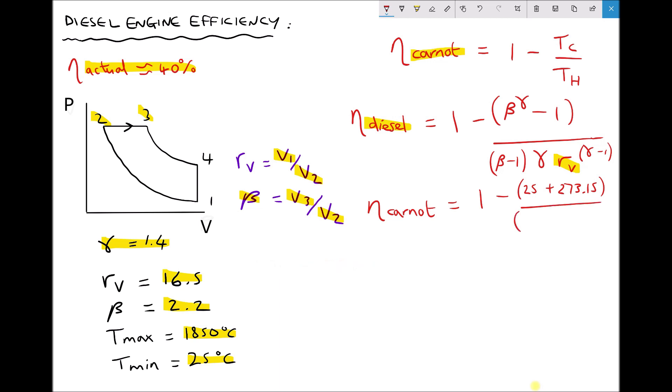On the bottom of that fraction we have T hot, 1850 degrees C again adding 273.15 to convert that to Kelvin. Now that gives us a Carnot efficiency as a decimal equal to 0.8596 or 86.0%.